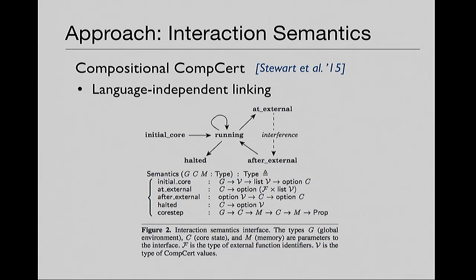Here's the diagram from the compositional CompCert paper — figure two, interaction semantics interface. They have this idea of language-independent linking: any language in the whole CompCert pipeline can be linked with code from any other language in the pipeline, or any other language as long as they're conformant in some way. How do they interact when put together? They have the idea of starting off in an initial core state. Language A is running, doing something to the program configuration, and then there is an interface for interacting with the other language. This is specified semantically in terms of behaviors, not in terms of syntax of languages.